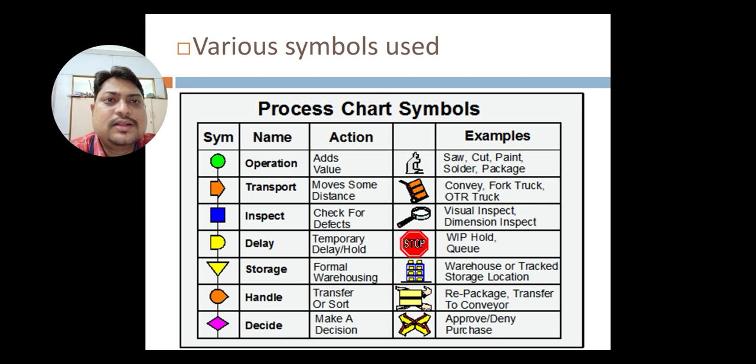I would like to show you some symbols that are used. Operation circle. Operation means sewing, cutting, painting, soldering, packaging. All these are operations. This kind of activity when carried out in production work is indicated by the symbol circle.